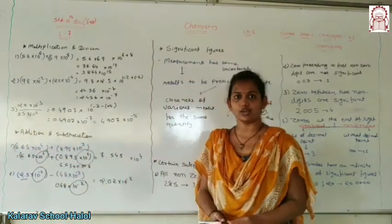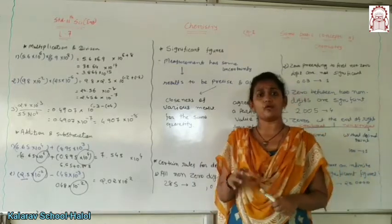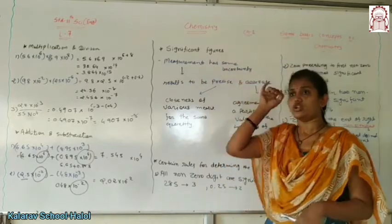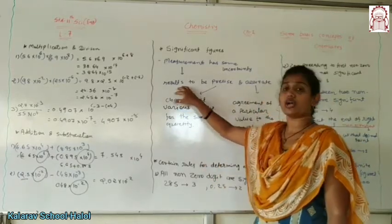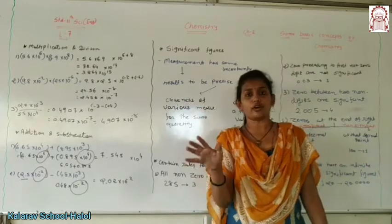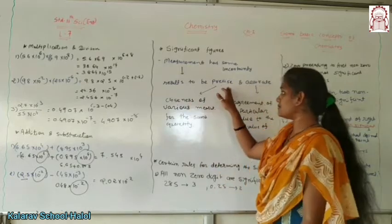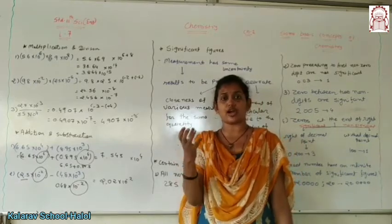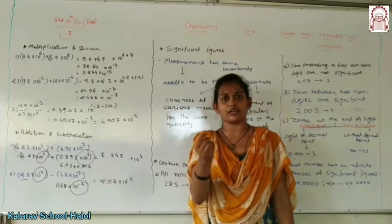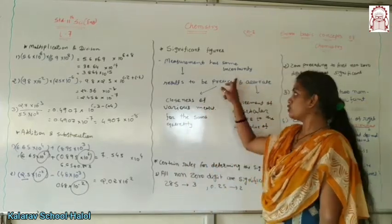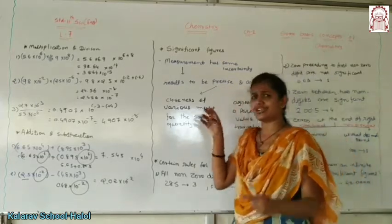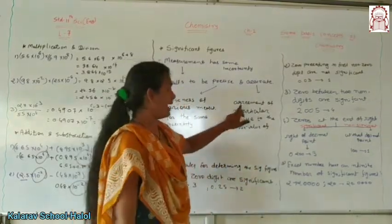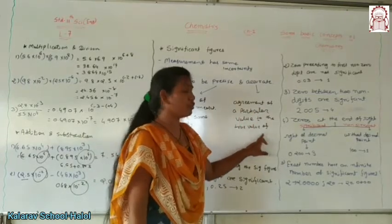Next our topic is significant figures. Significant figures relate to how to measure measurement. If you don't know the measurement, you have to measure uncertainty. Measurement is how to express uncertainty in a result. The result is described as precise and accurate. So first of all, what is the meaning of precise and what is the meaning of accurate? Precise means that various measurements of the same quantity agree closely with each other. Accurate means the measured value is close to the true value of the measurement.